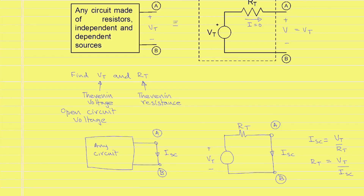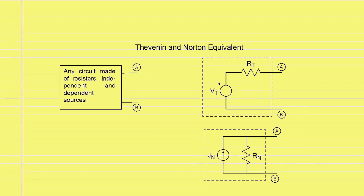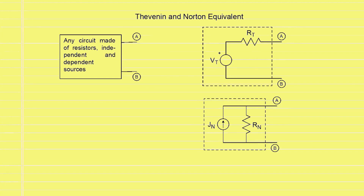Closely related to the Thevenin equivalent is another equivalent circuit called the Norton equivalent. For the Thevenin equivalent, we have shown that any circuit made up of resistors, independent and dependent sources, enclosed inside a box with two terminals A and B coming out of it, is equivalent to a single voltage source of value VT in series with a resistance of value RT. We have given methods to compute VT and RT above.